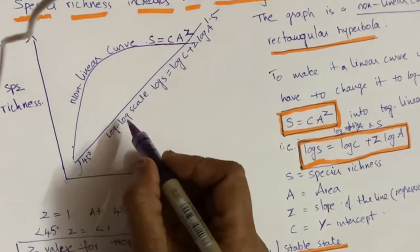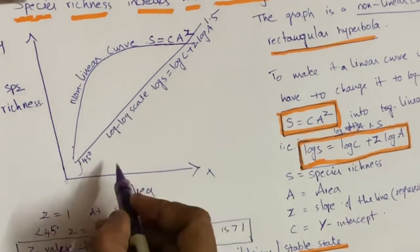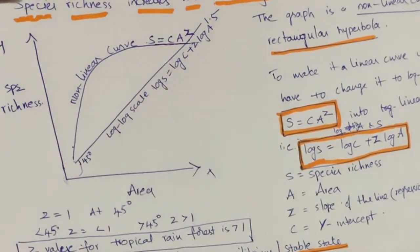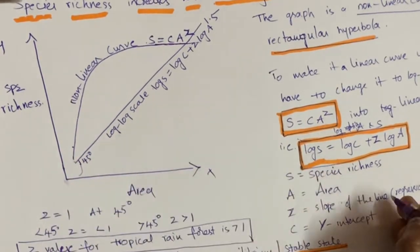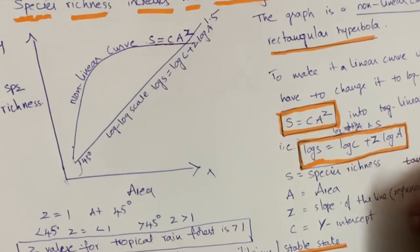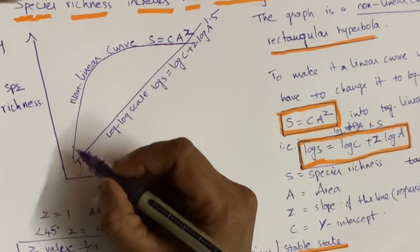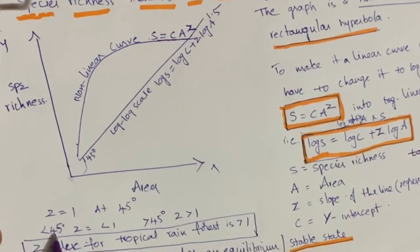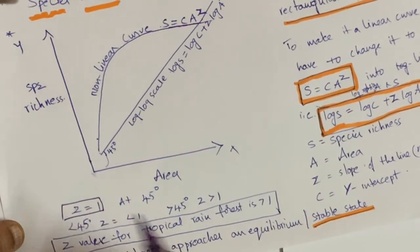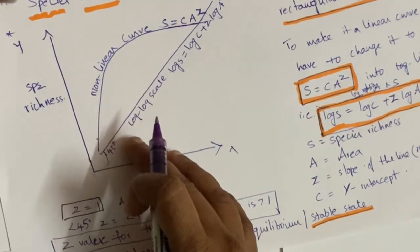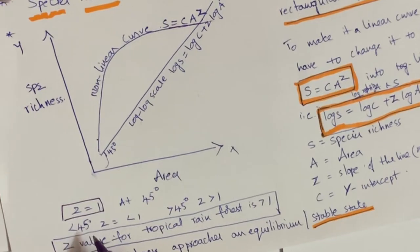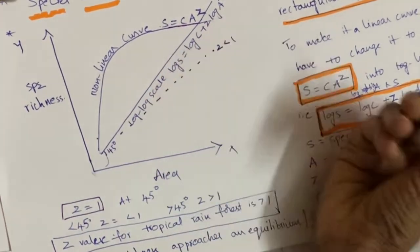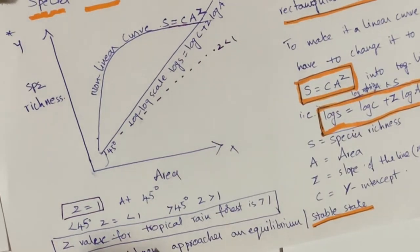On the log-log scale, as the area on the x-axis increases, species richness also increases. At 45 degrees, tan 45 equals 1, so the z value equals 1. If the angle is below 45 degrees, the z value becomes less than 1 — it may be 0.6 or something — and the curve is shallower.